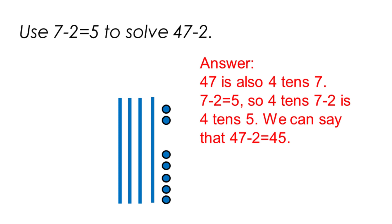47 is also four tens and seven. Seven minus two equals five, so four tens, seven minus two is four tens five. We can say that forty-seven minus two equals forty-five.